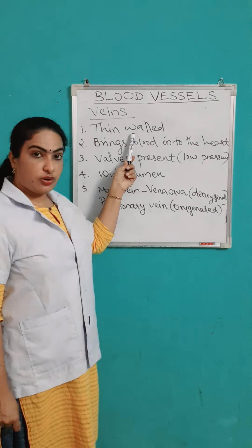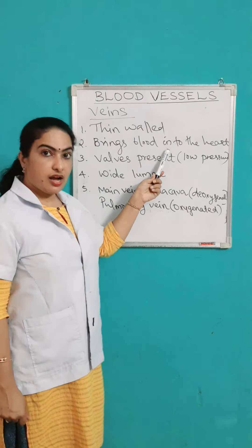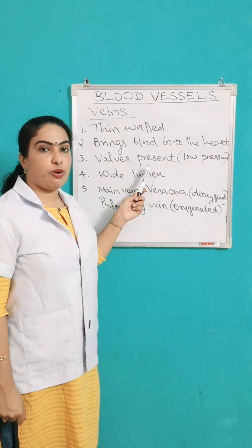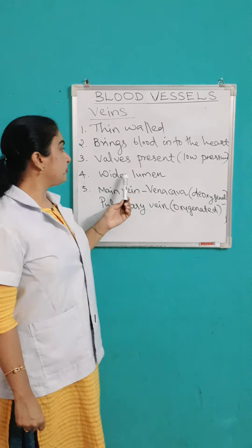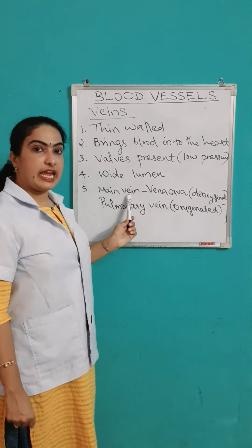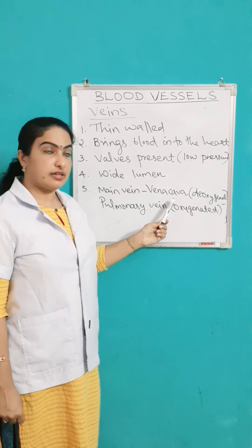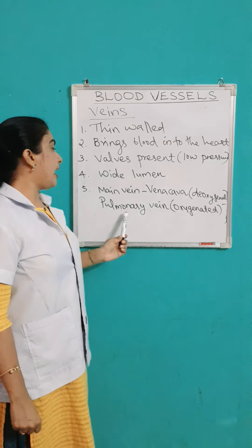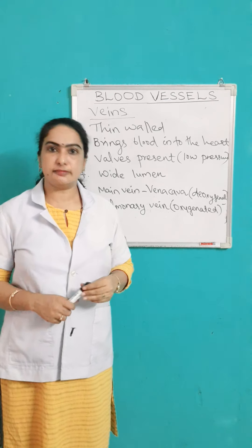Let us recap veins. Veins are thin-walled blood vessels. They bring blood into the heart under low pressure, so there is a chance of backflow of blood — to prevent that, valves are present in case of veins. The lumen is wide. The main vein is known as vena cava. Normally veins carry deoxygenated blood, and there is an exception: the pulmonary vein carries oxygenated blood.